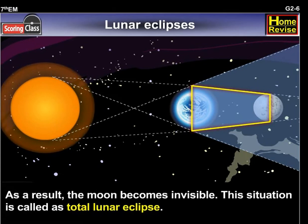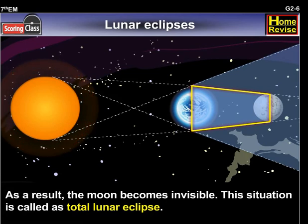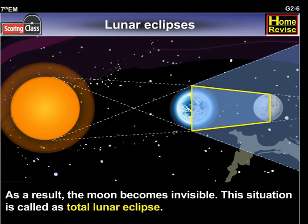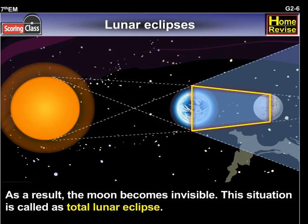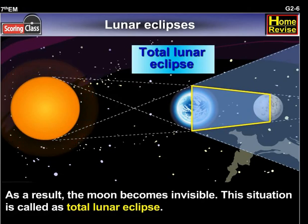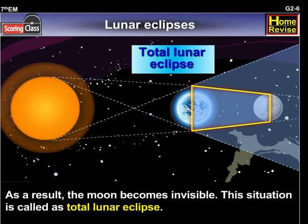As a result, the moon becomes invisible. This situation is called a total lunar eclipse.